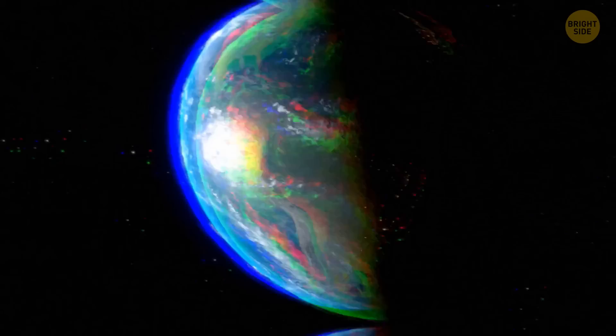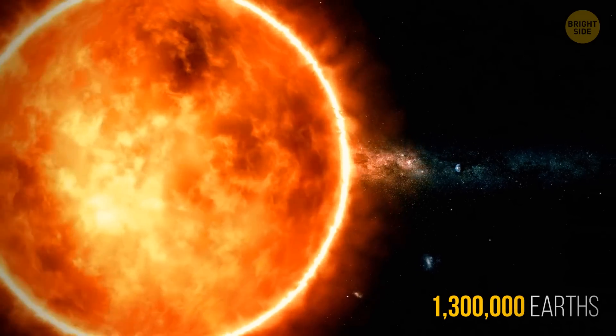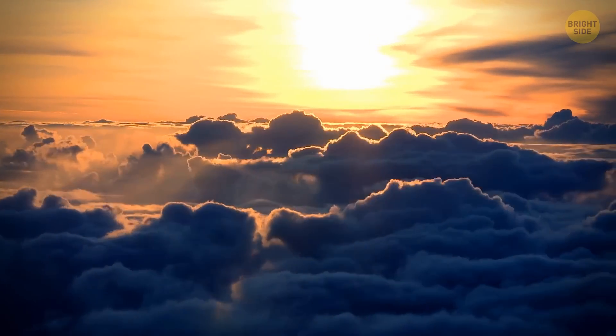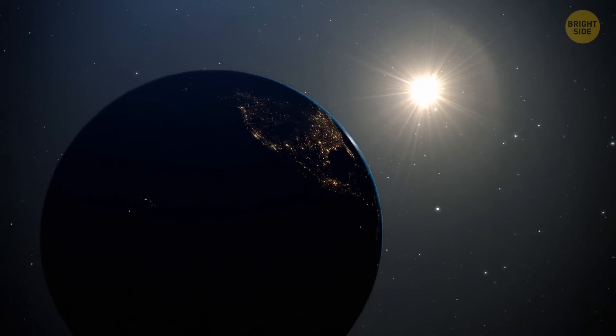People often underestimate how much bigger the Sun really is than our planet. In reality, it can fit more than 1,003,000 Earths. So, yes. The Sun won't go out or even get colder. It won't even notice that we've done something. But let's not give up.